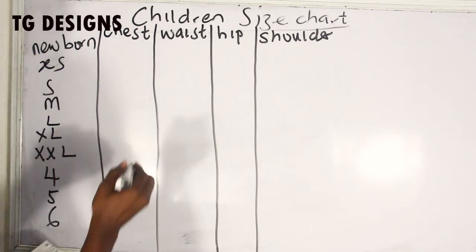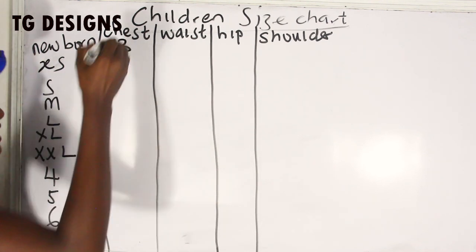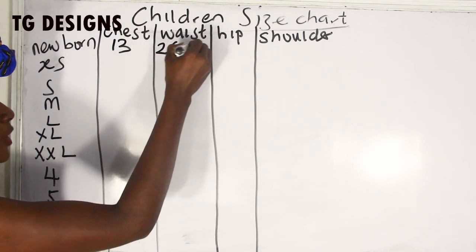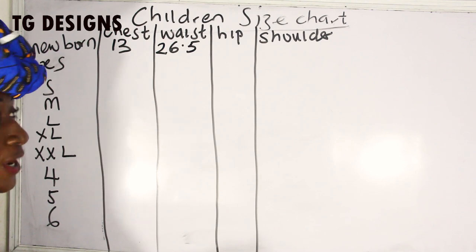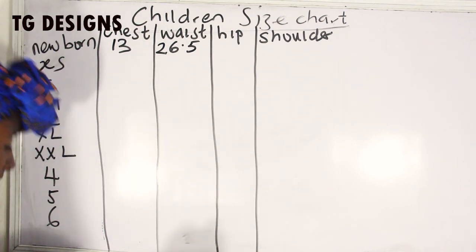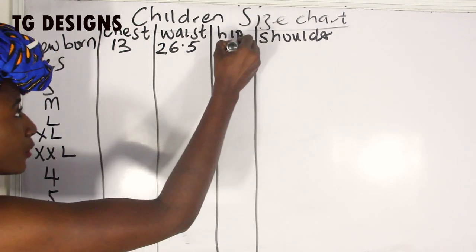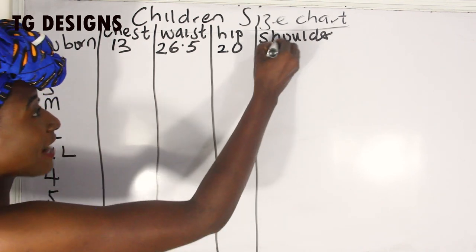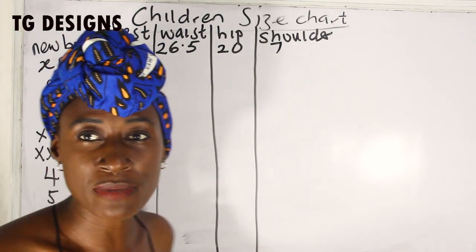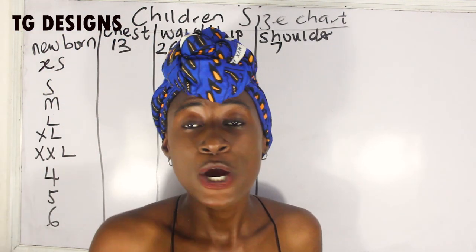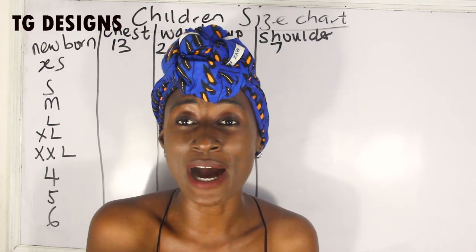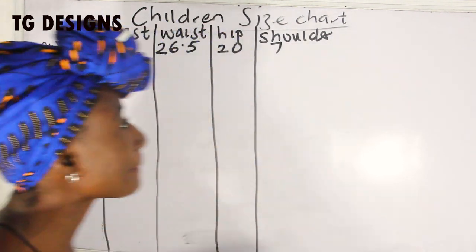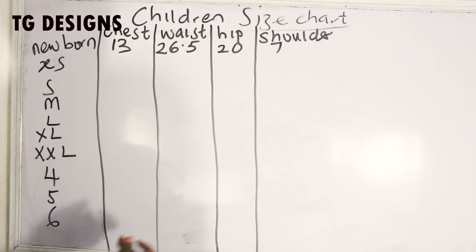The first measurement we have is for a newborn baby. For the chest of a newborn baby we have 30 inches. For the waist we have 26.5 inches. For the hip we have 20 inches. And for the shoulder we have 7 inches. So those are the measurements for a newborn.